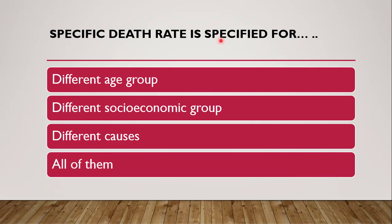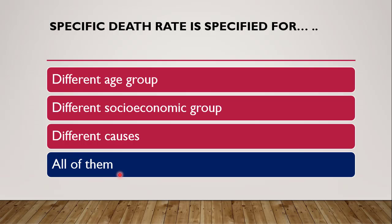The next question: Specific death rate is specified for — different age groups, different socio-economic groups, different causes, or all of them? The correct answer is all of them. Specific death rate is specified for different age groups, different socio-economic groups, and different causes.